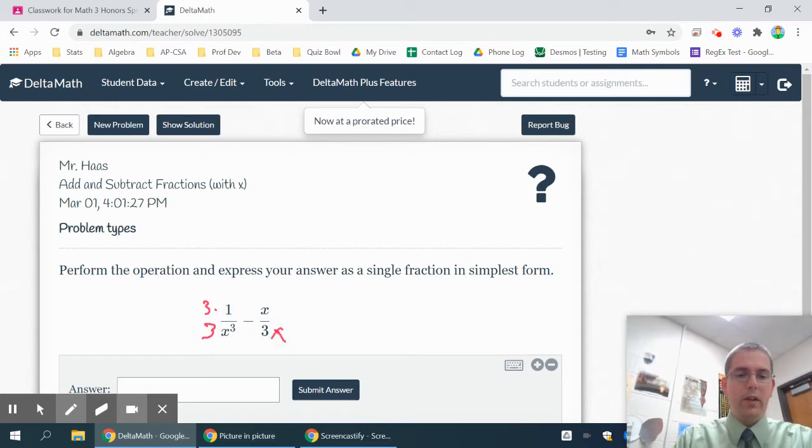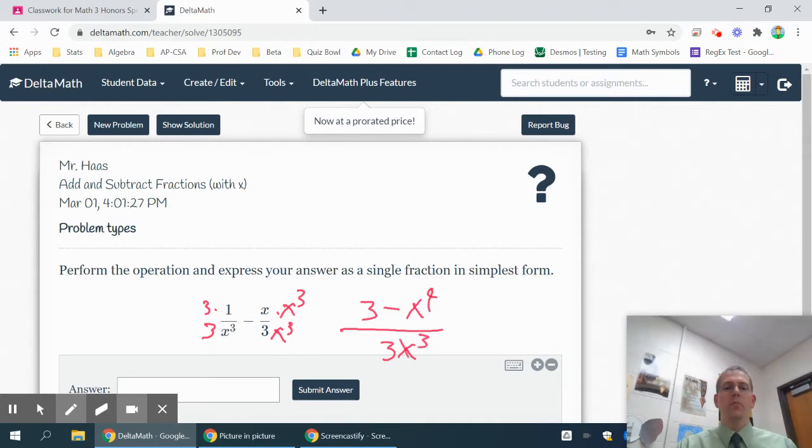This one, it has a three, it needs an x to the third. So I would have to multiply the numerator by x to the third as well. That means my numerator becomes three minus x to the fourth over three x to the third. Once the denominators match, you can just put the numerators together.